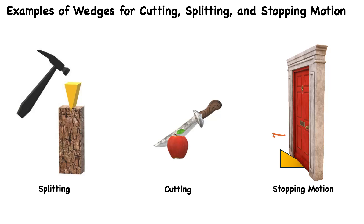For example, if the door were to try to swing open, the weight of the door will come into contact with the sloped face of the wedge. The friction from the surface of the wedge and the ground helps resist motion, and it's very effective at doing so.